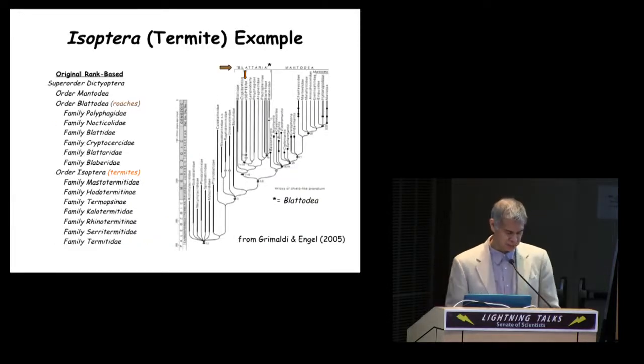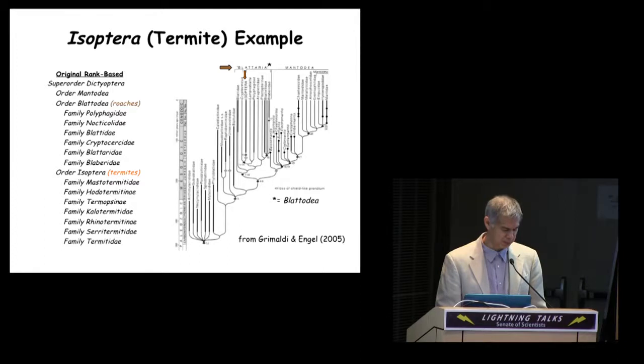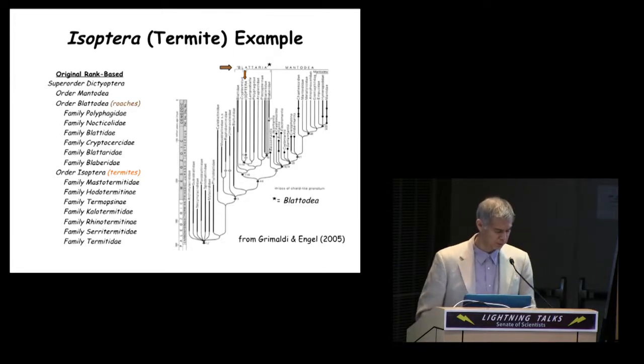Moreover, when ideas about relationships change, ranks often need to be adjusted, and the result can be a cascade of unnecessary name changes. Here's a real example. Traditionally, the cockroaches, Blattodea or Blattaria, and the termites, Isoptera, have been considered to form mutually exclusive groups, which was reflected in their traditional treatment as separate orders, as shown in the taxonomy on the left.